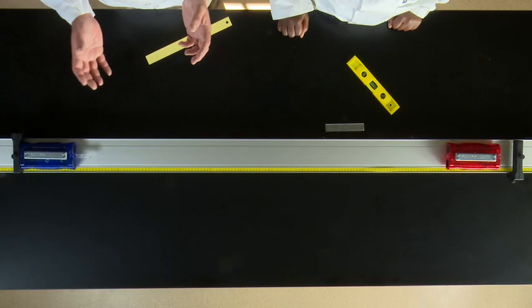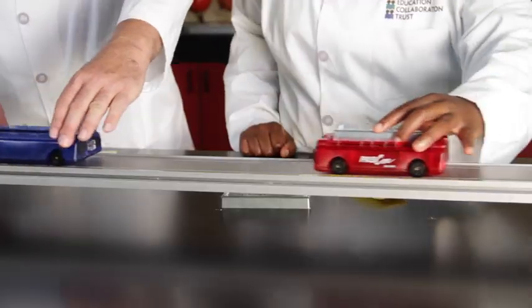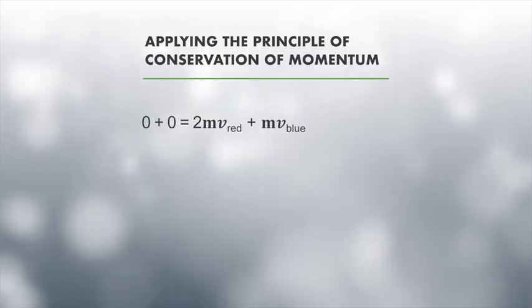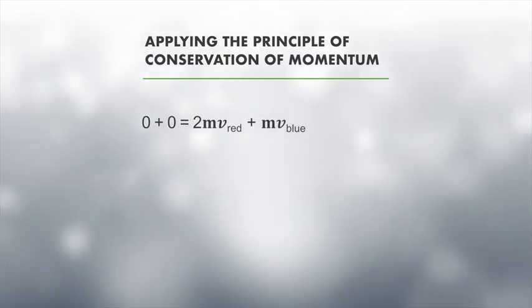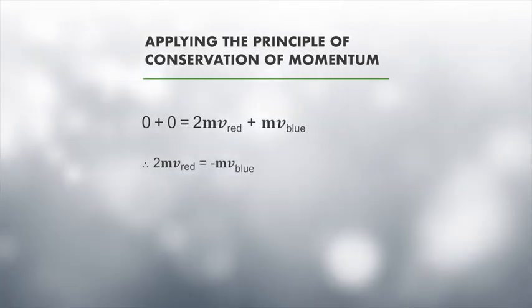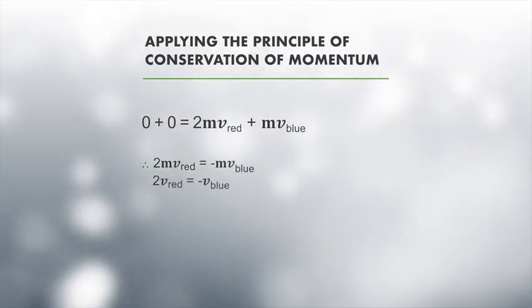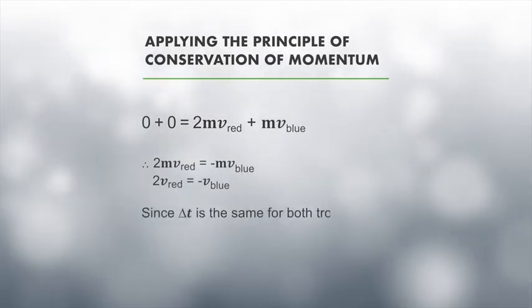Now what would happen when one of the trolleys is twice the mass of the other? Let's make the red trolley twice the mass of the blue trolley. We need to find a position which allows them to both hit their respective barriers at exactly the same time. We can use the principle of conservation of linear momentum. Applying the principle of conservation of momentum, the initial linear momentum of the system equals its final momentum. Therefore 2mv_red equals minus mv_blue. Dividing through by the mass m, we get 2v_red equals minus v_blue. Since delta t is the same for both trolleys, the red trolley covers half the distance of the blue trolley in the same time.